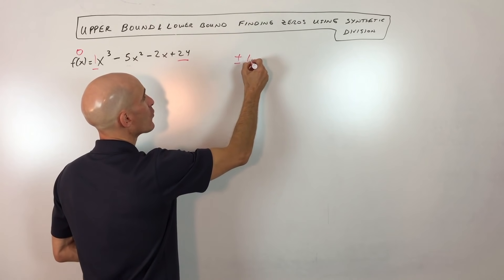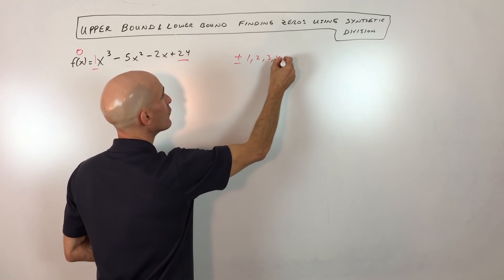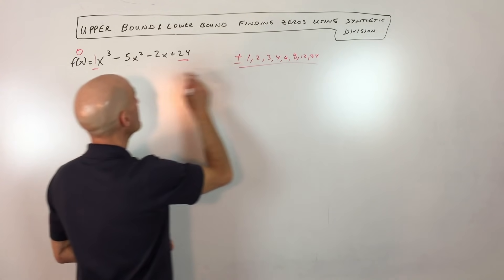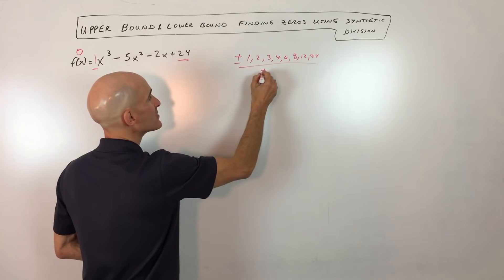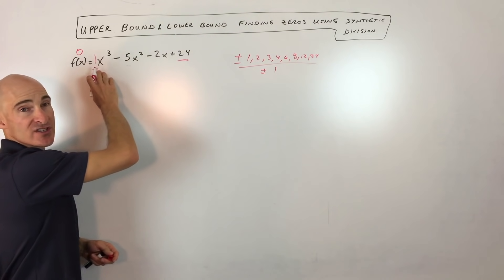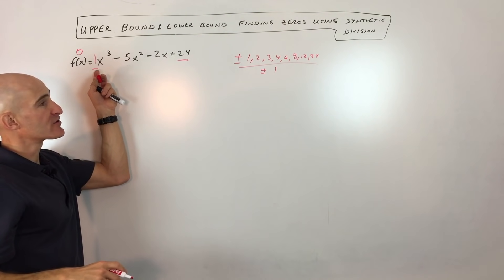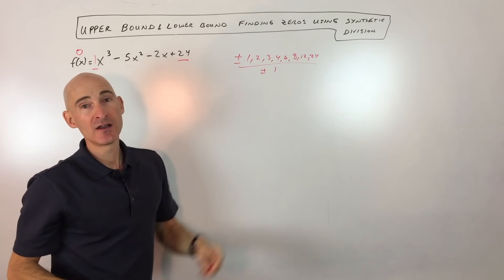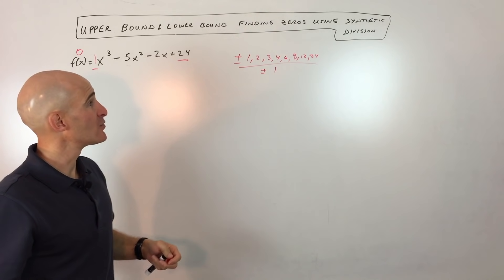We're going to take all the factors of 24, which are 1, 2, 3, 4, 6, 8, 12, and 24. All divided by plus or minus one. So the leading coefficient isn't always one. Sometimes it might be three or something like that. And you have then plus or minus one, plus or minus three, which could leave us some fractions as possible zeros.